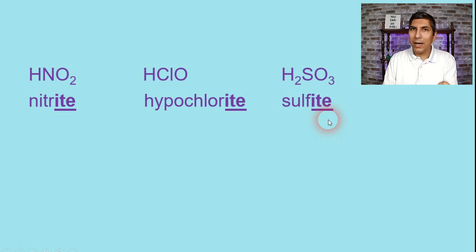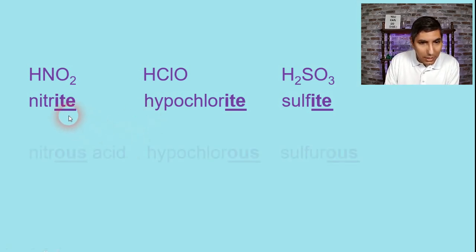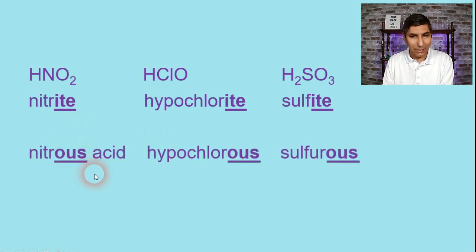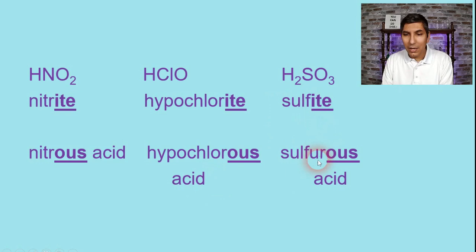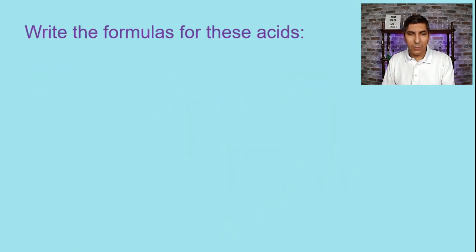So in this case, if the anion that's in that acid ends with ITE, we replace the ITE with O-U-S, US. So for example, the hydrogen followed by nitrite becomes nitrous acid. The hydrogen followed by hypochlorite becomes hypochlorous acid. And the hydrogen followed by sulfite becomes, once again, not sulfous, but sulfurous acid. That's an acid that's often found in acid rain. So here we have the way to name these different types of acids.